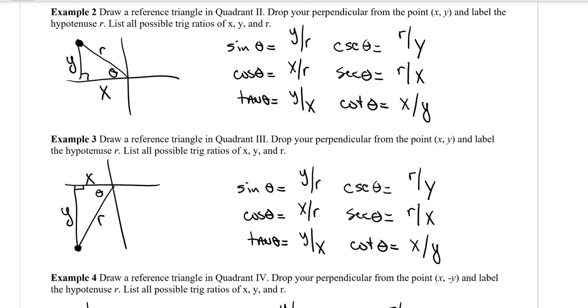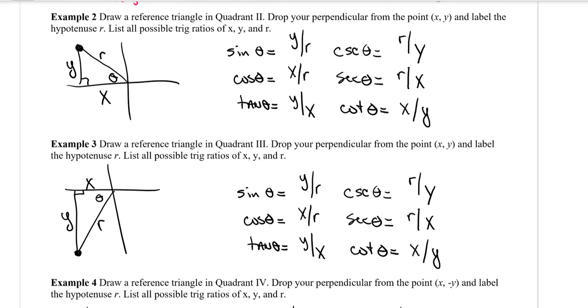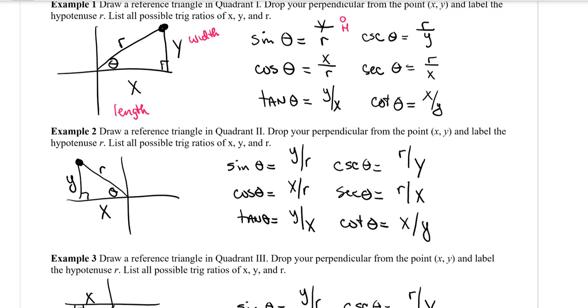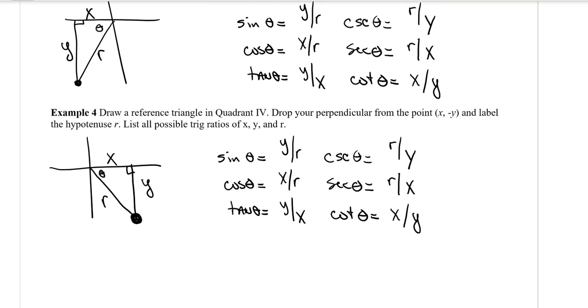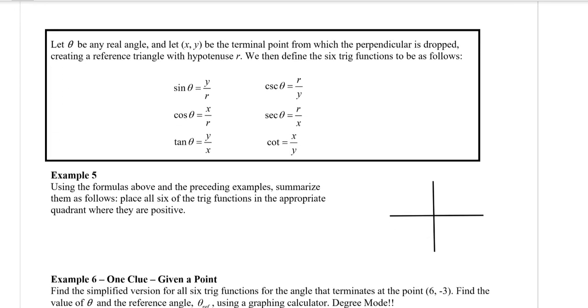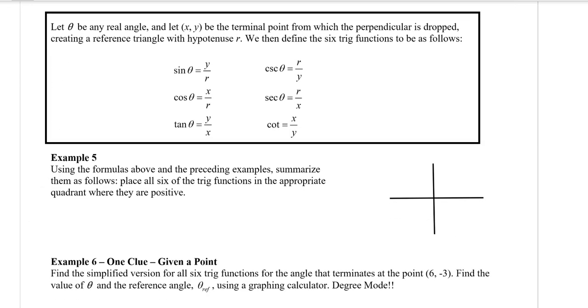All right, how'd you guys do? You should notice a pattern here. No matter which quadrant we're drawing that reference triangle in, whether it's in quadrant number one, quadrant number two, quadrant number three, or quadrant number four, the trig ratios, the six possible trig ratios, are all going to be the same ratios. Sine's always going to be the y-coordinate over the radius. Cosine will always be the x-coordinate over the radius, and so on and so forth. So hopefully you see that pattern, and you are ready to roll.